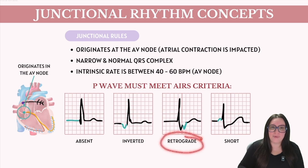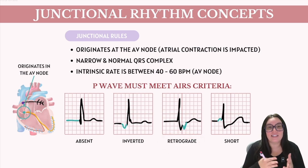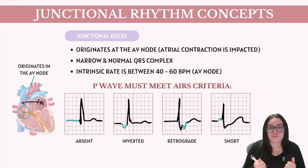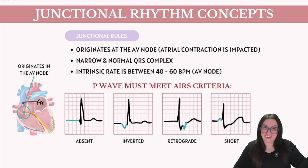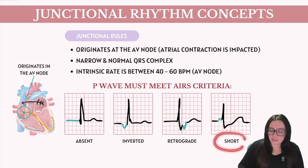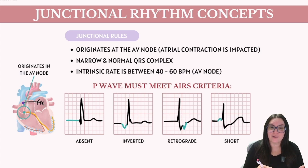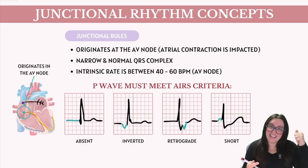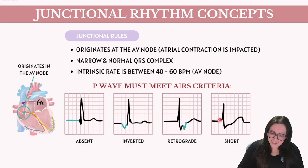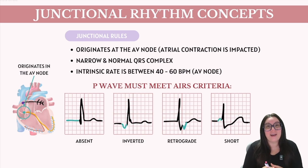Next up we have our retrograde P wave. This is when the P wave is visible following our QRS complex, indicating that the atria are contracting after the ventricles due to the impulse traveling backwards. And then lastly, we have short PR intervals. This happens because the impulse originates near or within the AV node and has a very short distance to travel to reach the ventricles compared to an impulse from our SA node. That's when you're going to see basically this hugging of our P wave to the QRS.